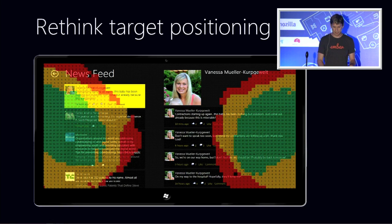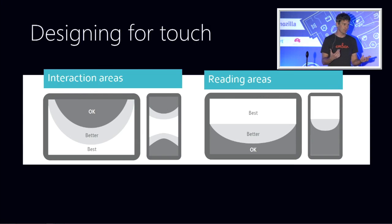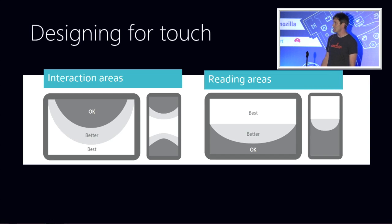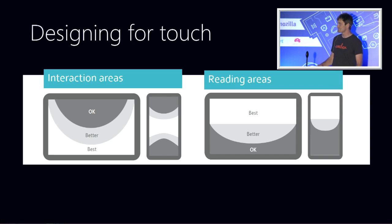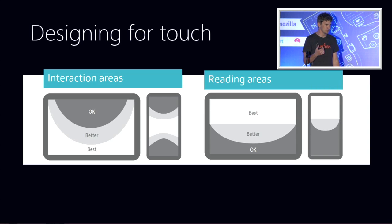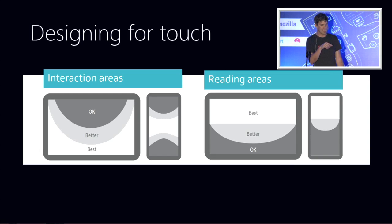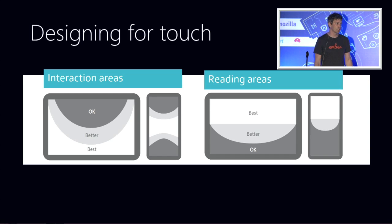As things move toward the center of the screen, it becomes more difficult for people to use. On the phone it's exactly the opposite — you're using your thumb, so the best interaction zone is actually in the middle. The best areas for reading content on tablets are up top, where hands aren't obscuring the screen, and similarly on the phone.